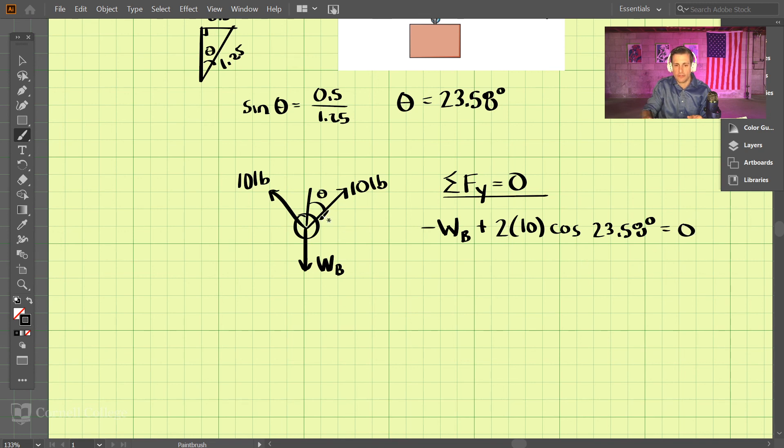And the 2's here because we have two forces, and they're both the same, because of symmetry here, and we find out the weight of block B comes out to be 18.3 pounds, and that is our answer for 342.